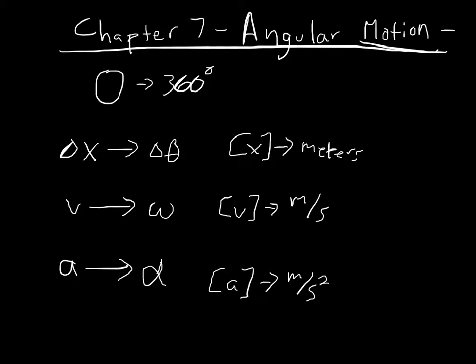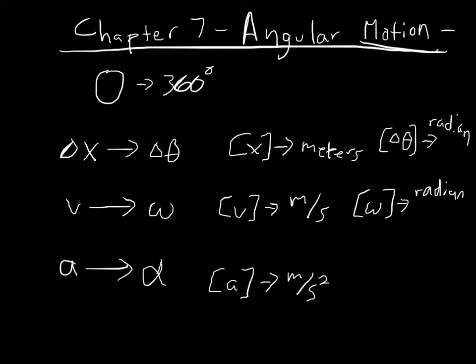In angular motion, we need a new unit for describing distance. We don't want to use meters — we can't easily measure a meter over an angular displacement. So we use a new unit called a radian. Which means we'll have new units of angular velocity: radians per second, and angular acceleration: radians per second squared.